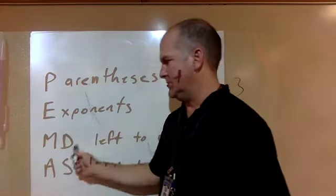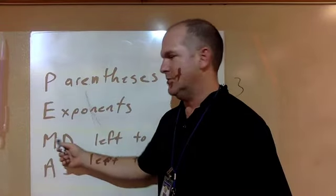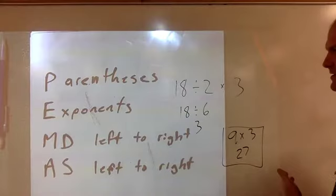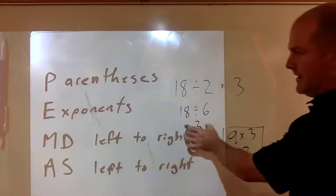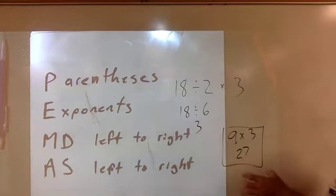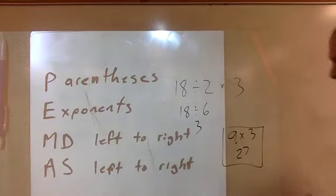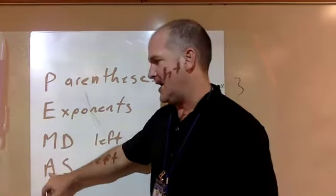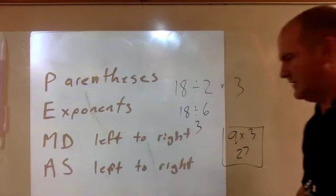Because multiply and divide are equal to each other, you don't have to multiply before you divide - you have to work from left to right. So it is not 3, it is 27. And the same thing goes with add and subtract - you don't necessarily have to add before you subtract, you just have to work left to right.